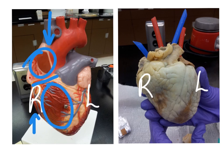From the right ventricle, it will then be pumped out of the heart via the pulmonary trunk, and then the left and right pulmonary arteries — the other ones are on the back.